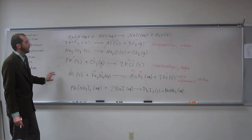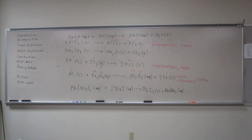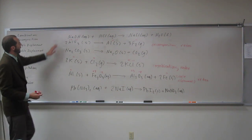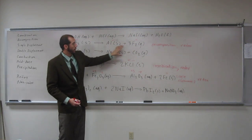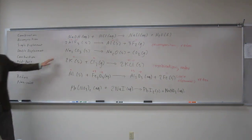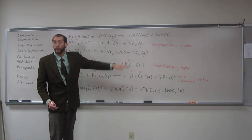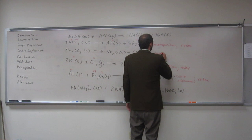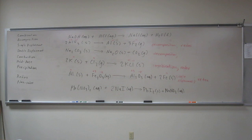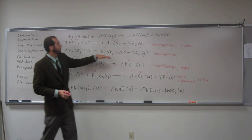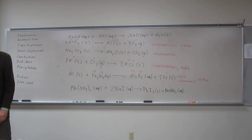Decomposition is where we have one starting material breaking into more than one product. Looking at the remaining reactions, this next one is a decomposition because we've got one thing breaking into two things. Decompositions can be redox or non-redox, so we have to figure out the oxidation numbers. Here we've got combined elements on both sides, so we can't just say zero. We're going to have to figure it out for everything.